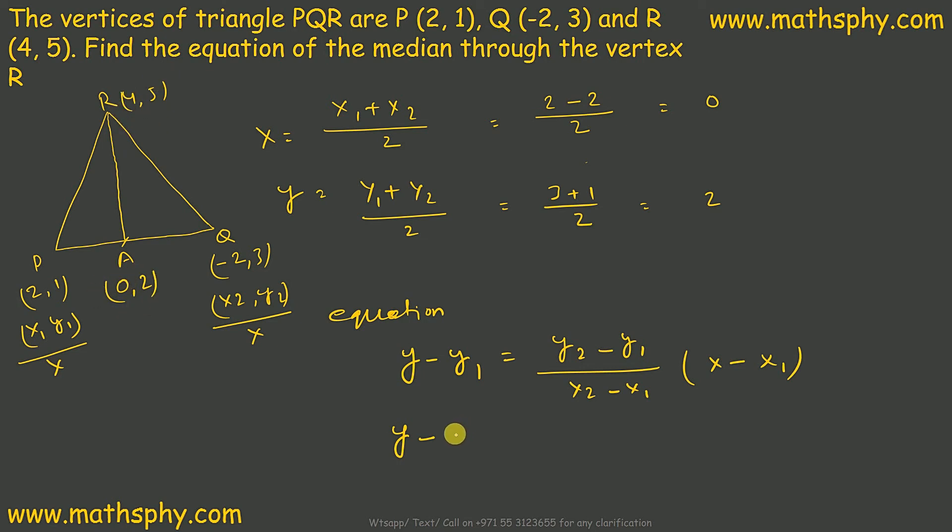So my y1 would be 5, y2 is 2, y1 is 5. x2 would be 0, x1 is 4, x I need to know, x1 is 4. So this will be y minus 5 equals to... That's the equation for this median. 3x minus 4y equals to negative 8. All right.